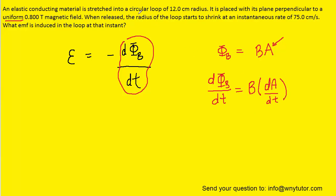And now for the area, we recall that the loop is circular. So we can use the expression pi r squared for the area. Let's substitute that in for A.